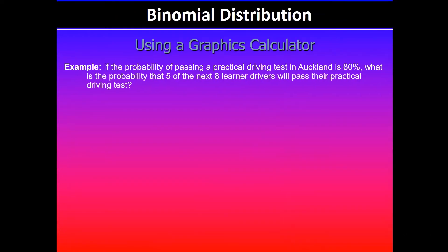In this question it says: if the probability of passing a practical driving test in Auckland is 80%, what is the probability that five of the next eight learner drivers will pass their driving test?